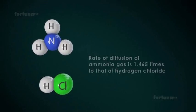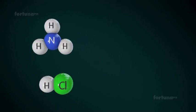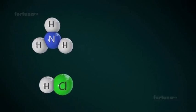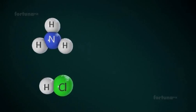This reveals that rate of diffusion of Ammonia gas is 1.465 times that of HCl. In other words, Ammonia gas will travel 1.465 times more than HCl when they are allowed to diffuse.